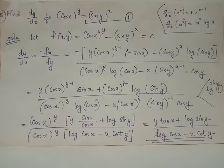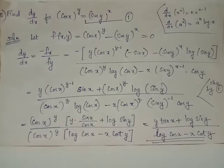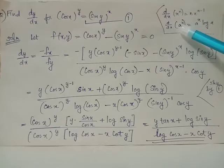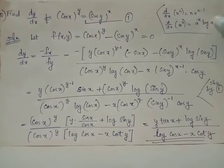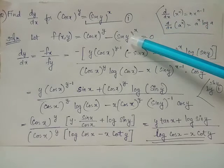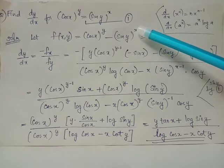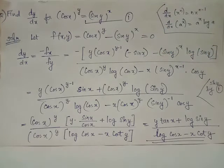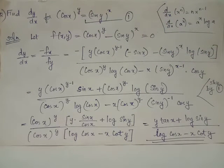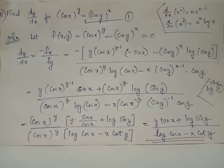When we partially differentiate the second term sin y whole raised to x with respect to x treating y as a constant, we use the rule d by dx of a raised to x equals a raised to x times log a, where a is a constant. Here in place of a we have sin y because y is treated as constant, and in place of x we have x itself. Thus the partial derivative of sin y whole raised to x with respect to x is sin y raised to x into log sin y.